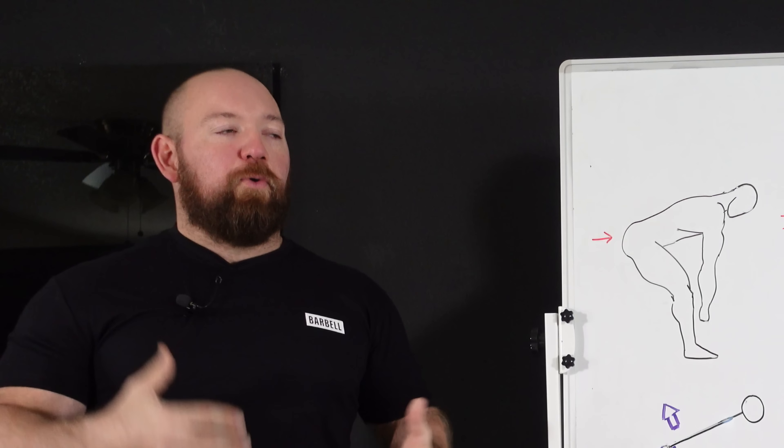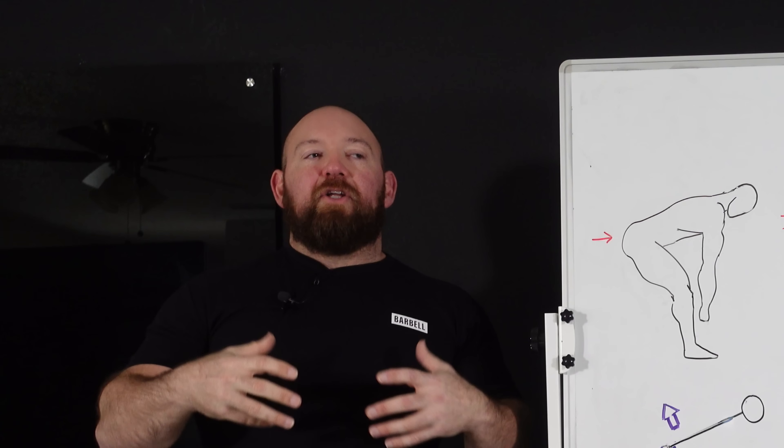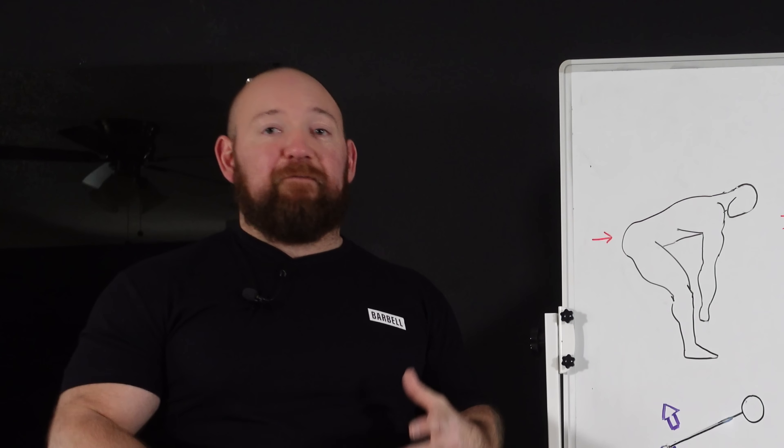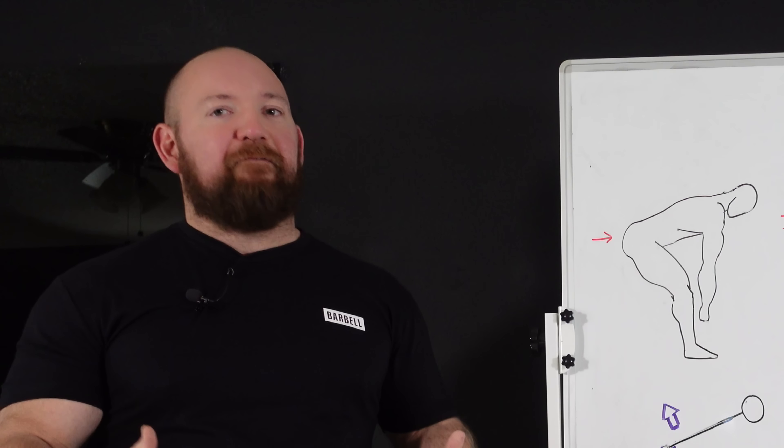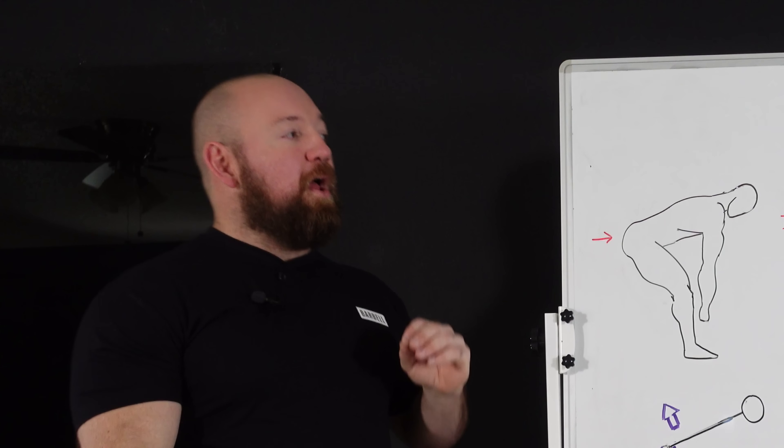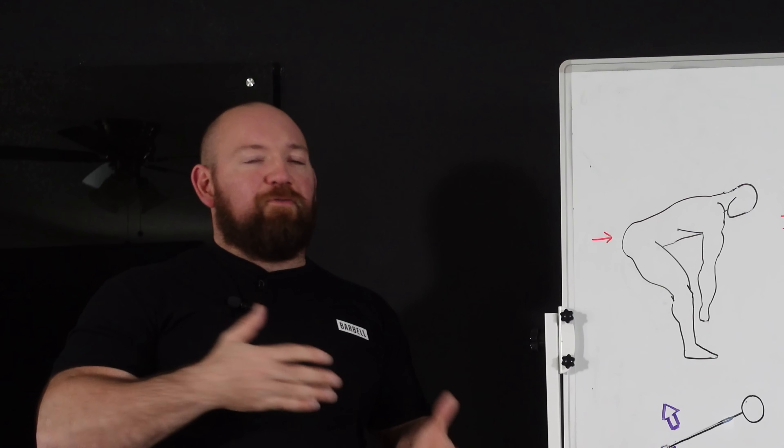Now we all know people who break the mold when it comes to the prototypical lifter. Certainly big squatters typically have very big thighs. Certainly big deadlifters have very thick developed hamstrings. And both of those athletes typically have very well-developed glutes because hip extension is so vital on success in both of those lifts. But we know people that don't fit that category.